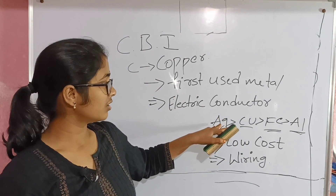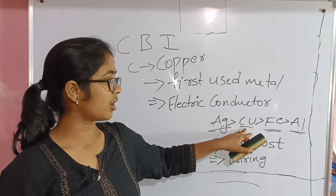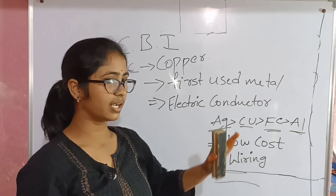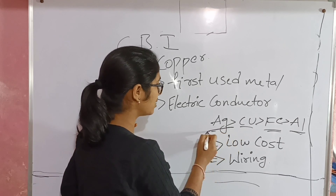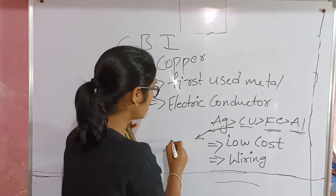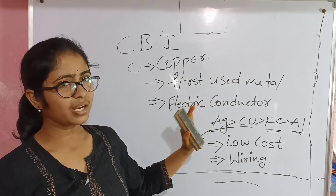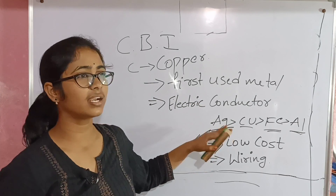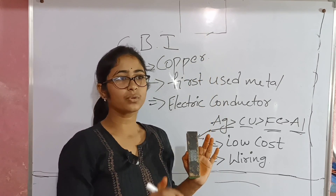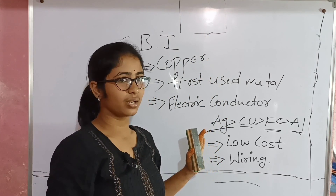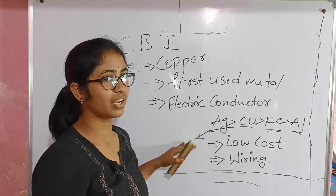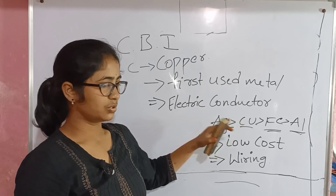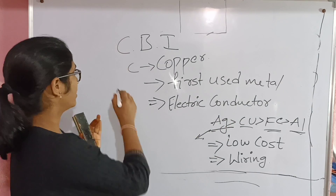Ag is the best conductor. Next is copper. Next is Fe. Aluminium is the third good conductor. Ag stands for Argentum — silver means bright. In Sanskrit it also means bright.